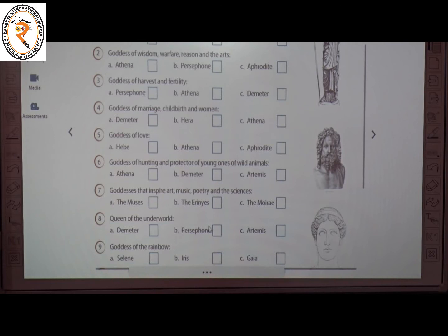The fourth one: Goddess of Marriage, Childbirth and Women. The answer is B — Hera. The fifth one: Goddess of Love. The answer is C — Aphrodite.